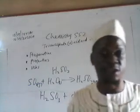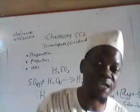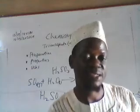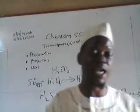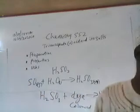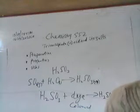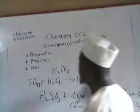What are the uses of trioxosulfate 4-acid? It is used as a bleaching agent. It is used as a germicide — meaning it can be used to kill germs. Apart from looking at the acid itself, we still need to talk about its salts.